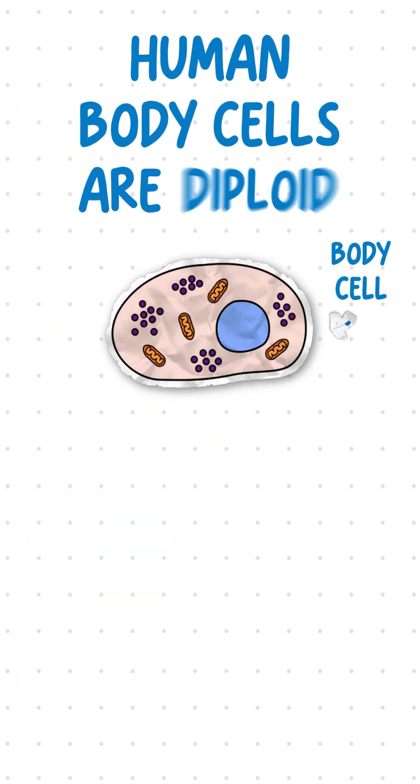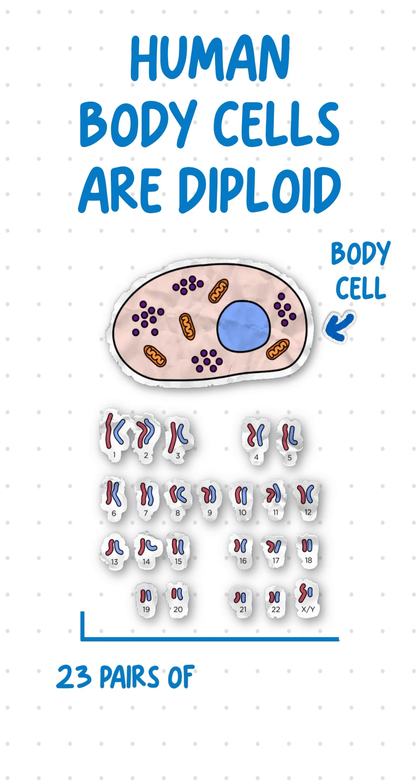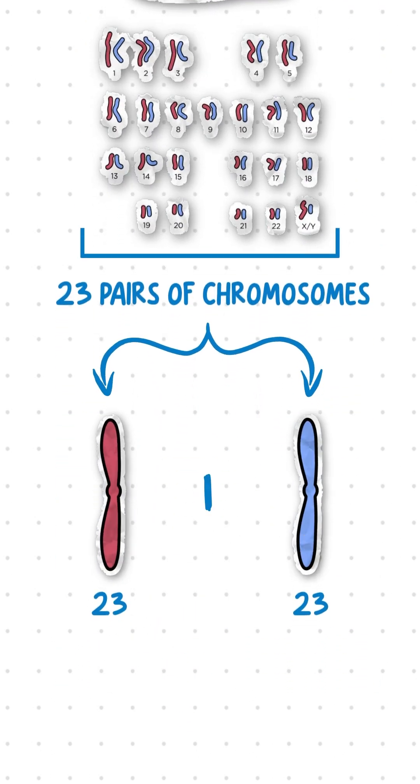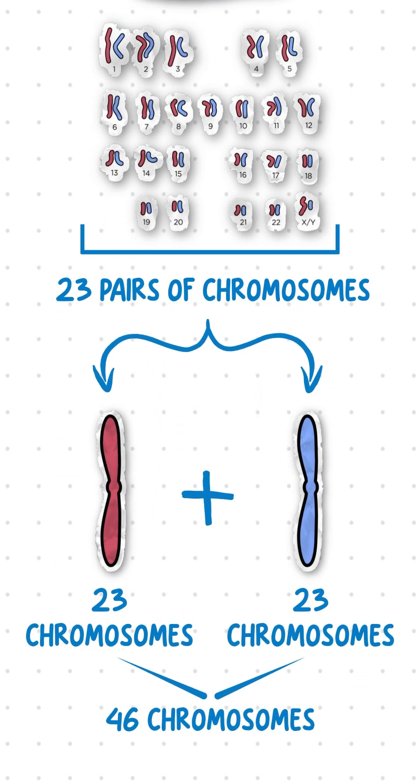Most human body cells are diploid, meaning they contain 23 pairs of chromosomes — one pair from each parent — which totals to 46 chromosomes.